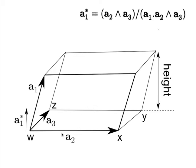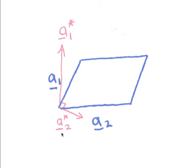Everything is summarized here and you need to be happy with this construction: the area enclosed by a2 and a3 is given by the magnitude of the cross product, and you have a vector which results at 90 degrees to that plane — that is a1*, which has a magnitude of 1 upon the height of that parallelogram. It is important to realize that a1* is not necessarily parallel to a1. You can see that from the two-dimensional diagram where we have an oblique cell and a1* clearly is not parallel to a1.